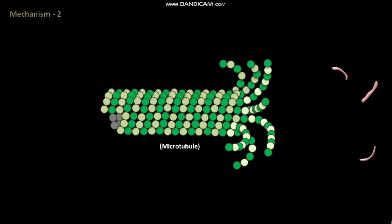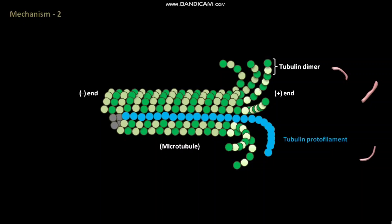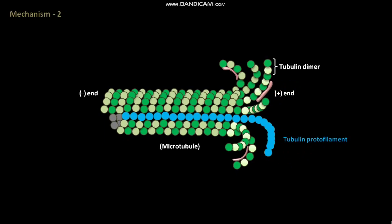Now let us discuss mechanism 2. A microtubule has a minus end and a plus end, and is made up of tubulin protofilaments. Each tubulin protofilament is made up of tubulin dimers.